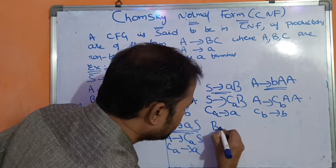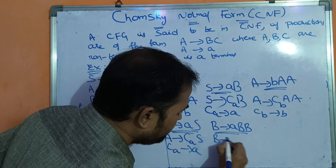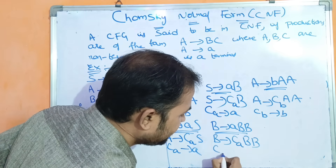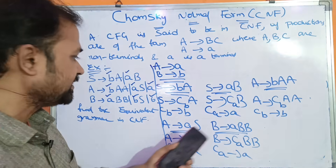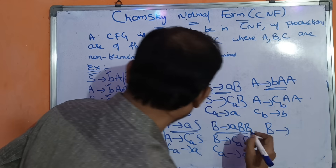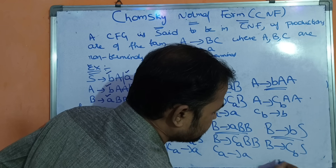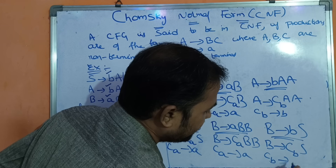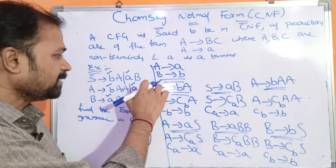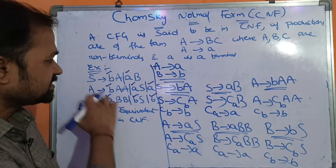Next, B implies ABB: replace the terminal A with CA, giving B implies CABB, where CA implies A. Then B implies BS: replace the terminal B with CB, giving B implies CBS, where CB implies B. Also, A implies A and B implies B are in Chomsky Normal Form.